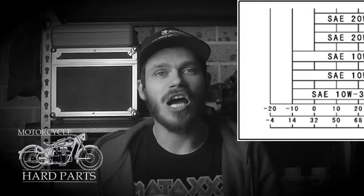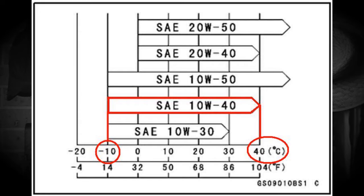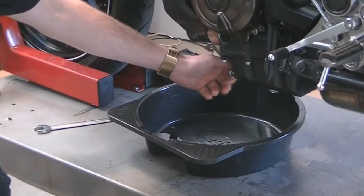The second number reflects how well this oil is going to maintain the engine in hotter temperatures — so how well it's going to work in summer. Let's look at this chart, which shows multi-grade oil ratings and which ones are going to be suitable for what ambient temperatures. A 10W40 is going to be suitable for winter temperatures of around minus 10 degrees Celsius up to summer temperatures of around 40 degrees Celsius. The 20W50, on the other hand, is going to be suitable for around 0 degrees Celsius up to 50 degrees Celsius.